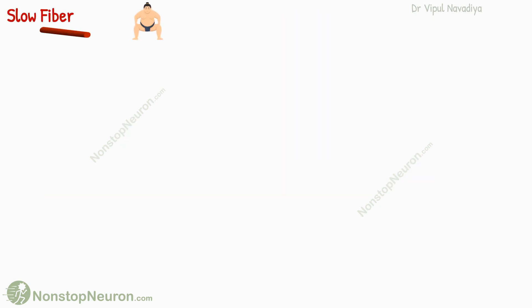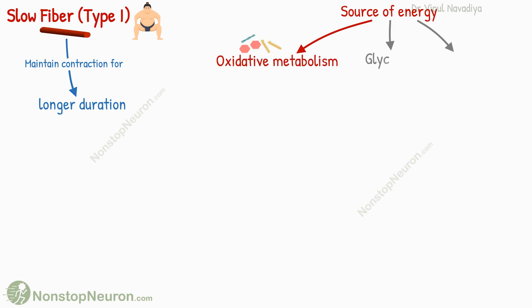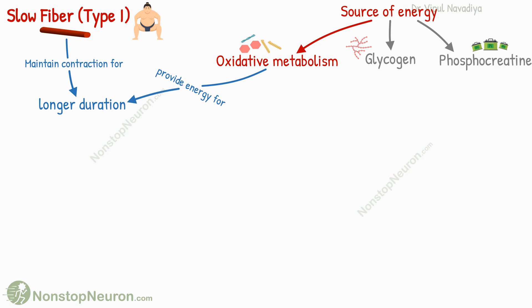First, slow fibers — also called type 1 fibers. Their purpose is to maintain contraction for a longer duration. As we saw in the video on the energetics of muscle contraction, there are three sources of energy in skeletal muscle: oxidative metabolism, glycolysis of glycogen, and phosphocreatine. Among these, only oxidative metabolism can provide energy for a longer duration; other sources do not last long.